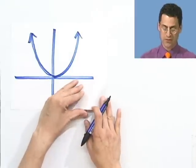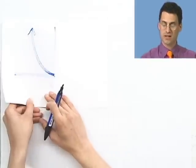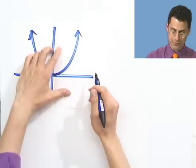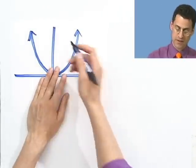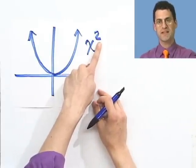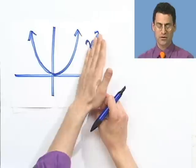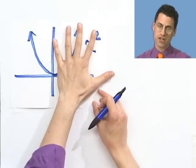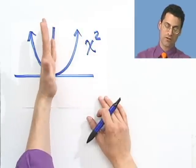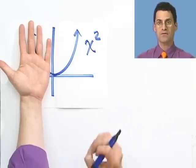A function that has this property — namely a function that's just a reflection over the y-axis, so that if you take the picture and literally reflect it over, you get the other side — such a function is called an even function.